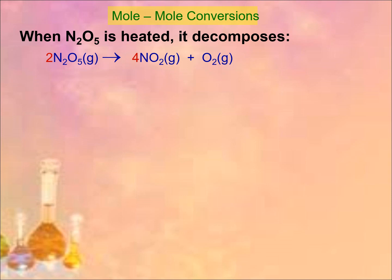First, let us have mole-to-mole conversions. When N2O5 is heated, it decomposes — from N2O5 gas, it produces nitrogen dioxide (NO2) and oxygen gas. The first step is to balance the equation. The balanced equation has coefficient 2 for N2O5 and coefficient 4 for NO2. Let's verify: 2 × 2 = 4 nitrogen on reactant side, 4 × 1 = 4 nitrogen on product side. 2 × 5 = 10 oxygen on reactant; 4 × 2 = 8 plus 2 (from O2) = 10 oxygen on product. The equation is correctly balanced.